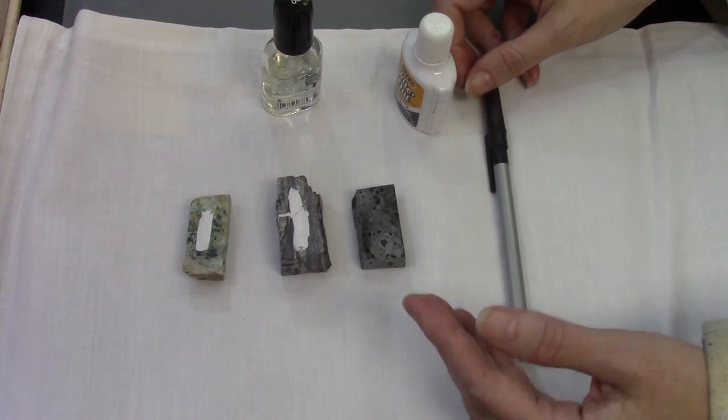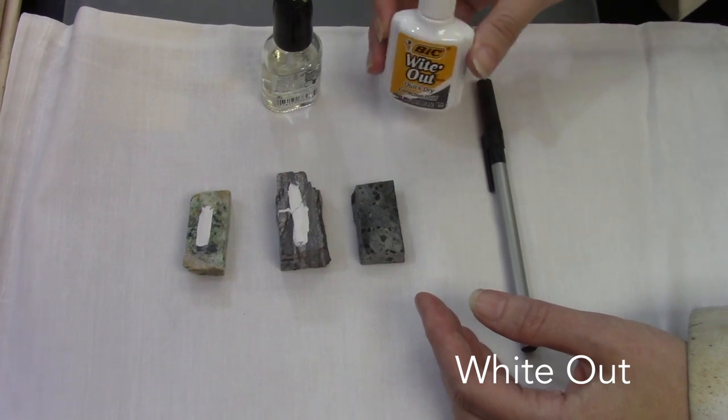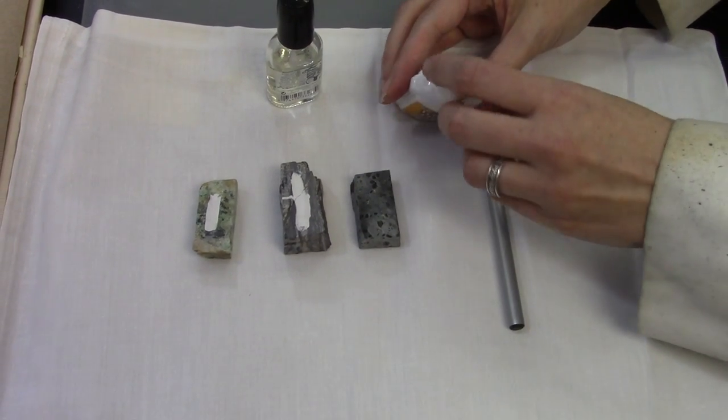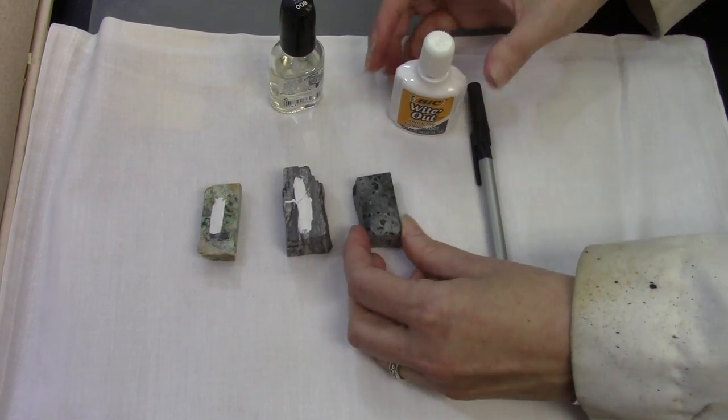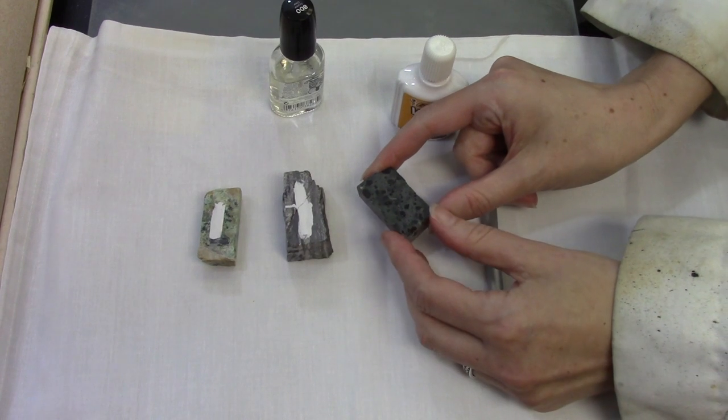One of the easiest ways is to use liquid correction fluid and make a stripe on the side of the thin section that's opposite the side you want to make the thin section of.